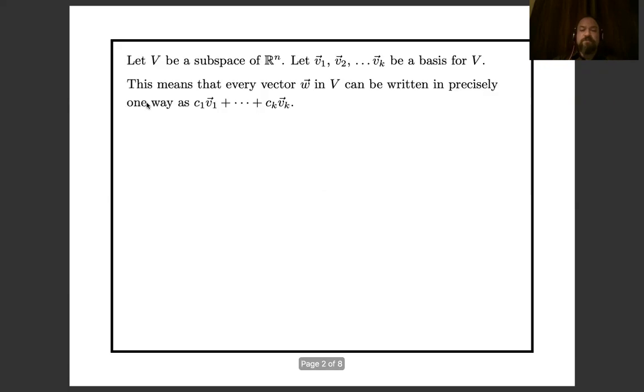So as with all the other lectures this week, our setting is that we have some subspace V of R^n, and we have a basis for that subspace. This means every vector w in our subspace can be written in precisely one way as a linear combination of the vectors in our basis.